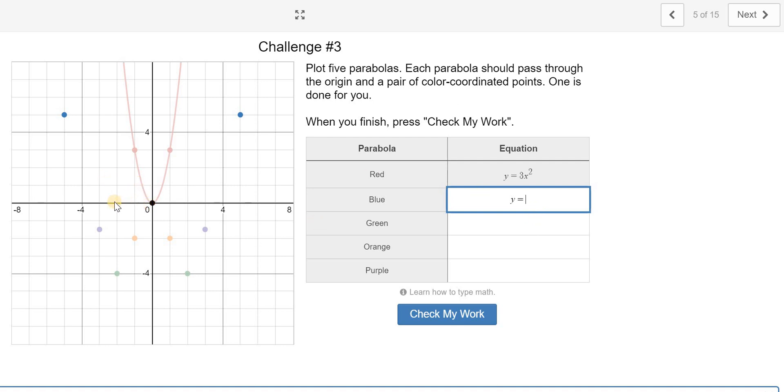So here, I'm going 1, 2, 3, 4, 5 over. And normally, if I go 5 to the right or 5 to the left, I would go 25 up because it's 5 squared.